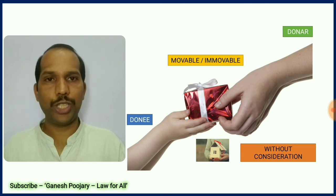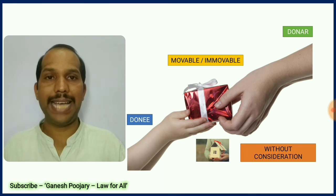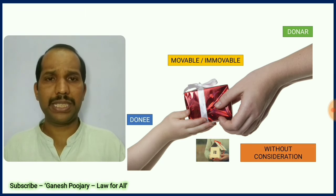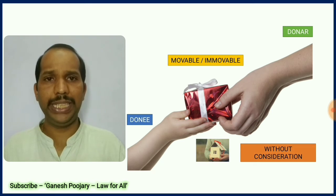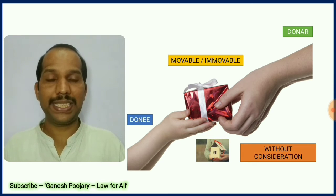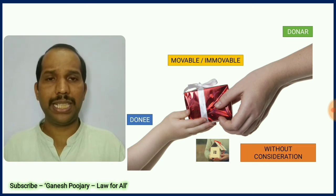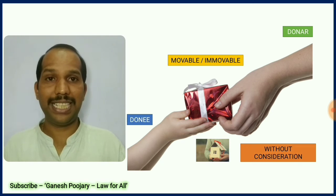This image helps us understand the concept of gift. The one who is giving the gift is known as the donor, and the one who is receiving the gift is known as the donee. The donor can gift both movable or immovable property — for example, a car is a movable property, whereas a house is an example of immovable property. There should not be any consideration from donee to donor in this transaction. Remember, love, affection, and spiritual thoughts are emotional things and are not considered as consideration under TPA.